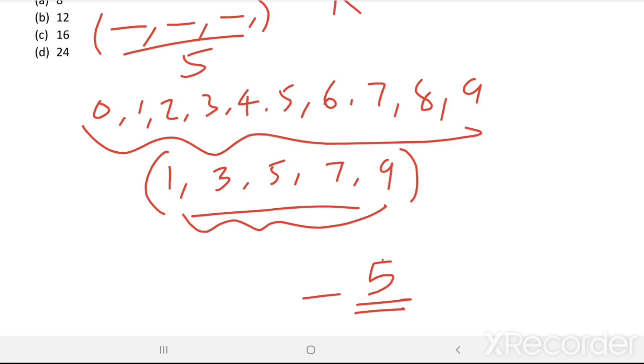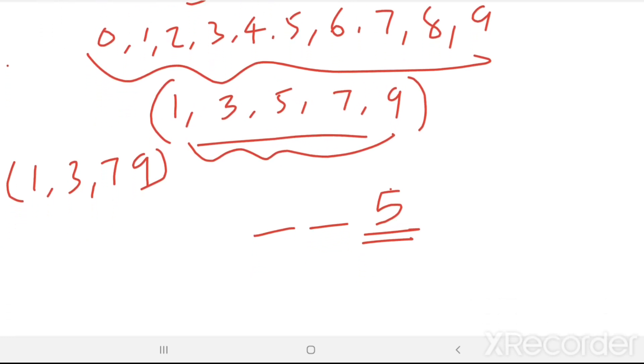Then we have to fill the remaining two spots using 1, 3, 7, 9. Suppose I am taking 1 and 3, then numbers possible are 1, 3, 5 and 3, 1, 5.